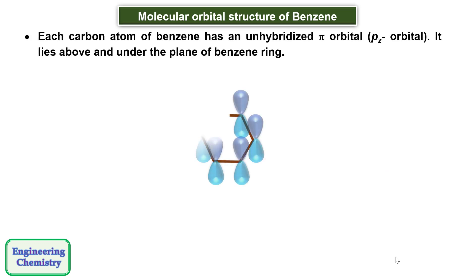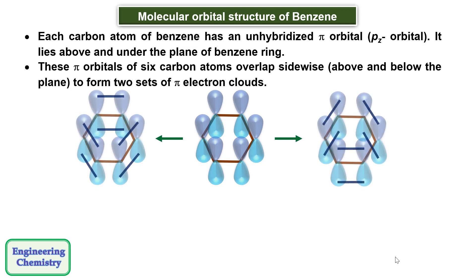Now each carbon atom of benzene has an unhybridized pi orbital, that is the pz orbital. It lies above and under the plane of the benzene ring. These pi orbitals of six carbon atoms overlap sidewise above and below the plane to form two sets of pi electron clouds.